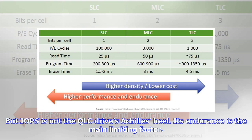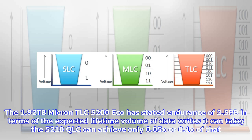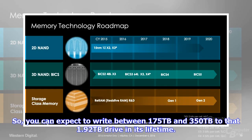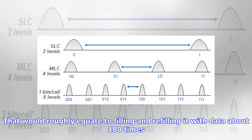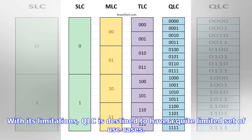But IOPS is not the QLC drive's Achilles heel — its endurance is the main limiting factor. The 1.92 TB Micron TLC 5200 Eco has a stated endurance of 3.5 petabytes in terms of expected lifetime volume of data writes. The 5210 QLC can achieve only 0.05x to 0.1x of that, meaning you can expect to write between 175 TB and 350 TB to that 1.92 TB drive in its lifetime — roughly filling and refilling it with data about 180 times.